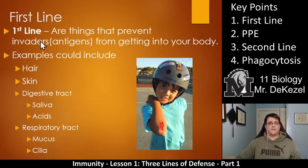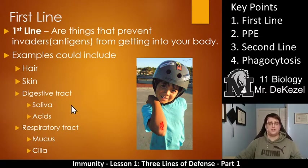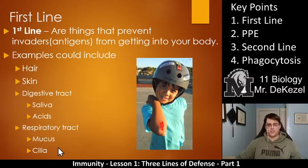The first line of defense consists of things that prevent invaders or antigens from getting into your body: hair, eyelashes, nose hair, cilia in your respiratory tract, and skin which covers most of your body. Within your digestive tract, saliva dissolves and dilutes things, acids in your stomach kill pathogens, and in your respiratory tract mucus captures invaders while cilia push them back out. The first line is anything that stops an antigen from getting into and infecting your body in the first place.